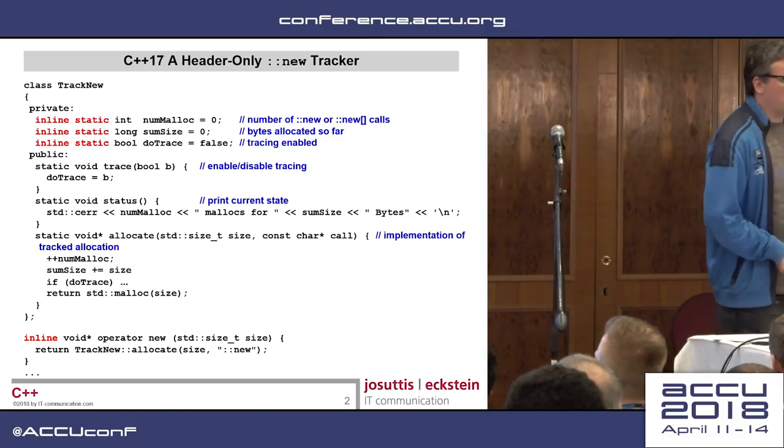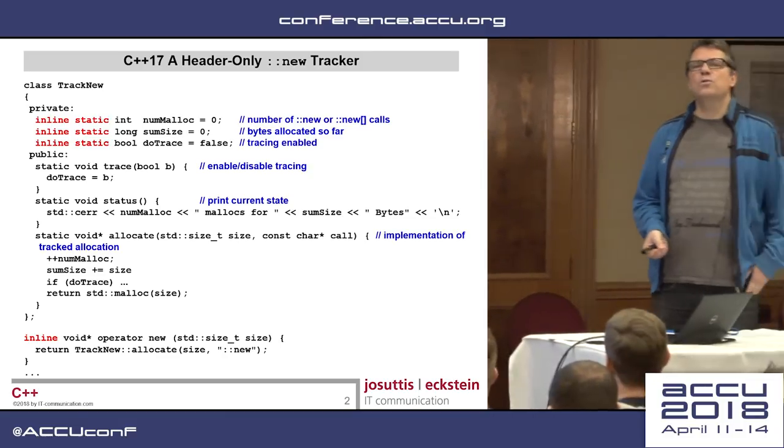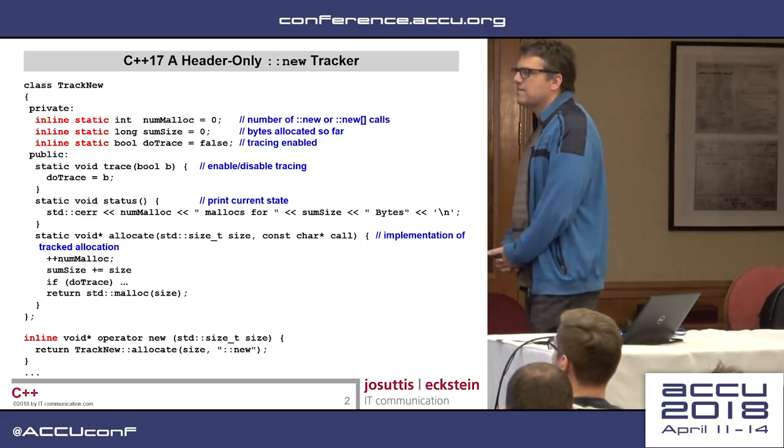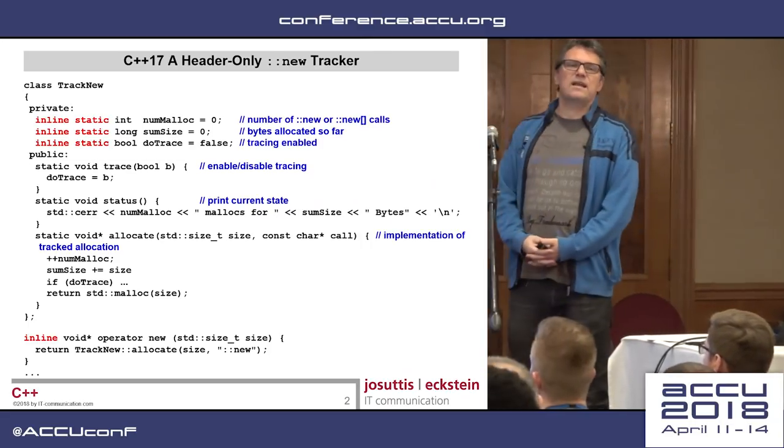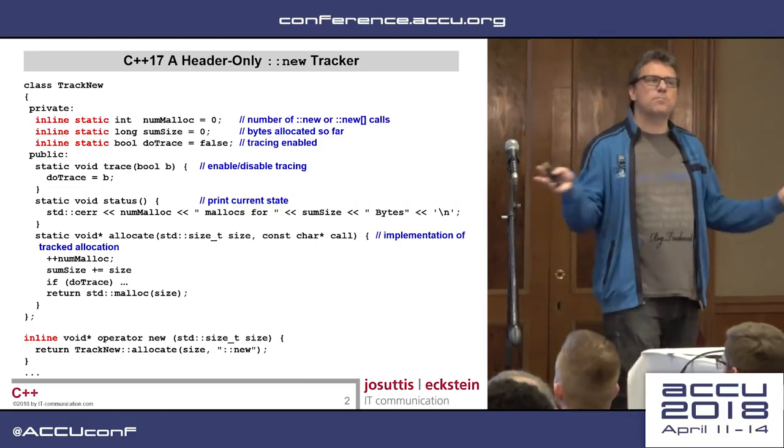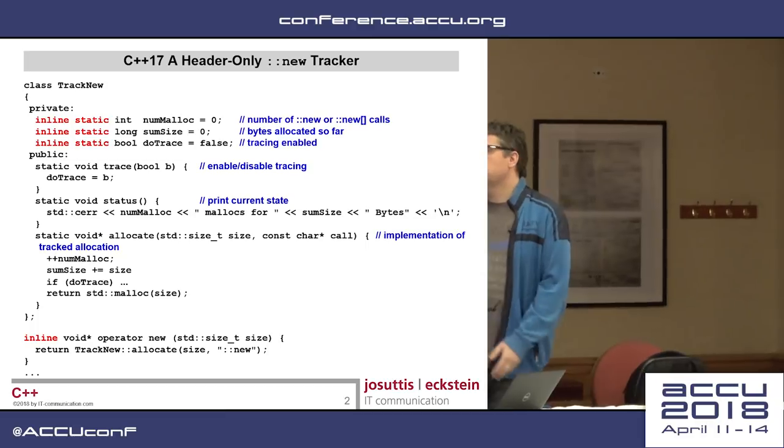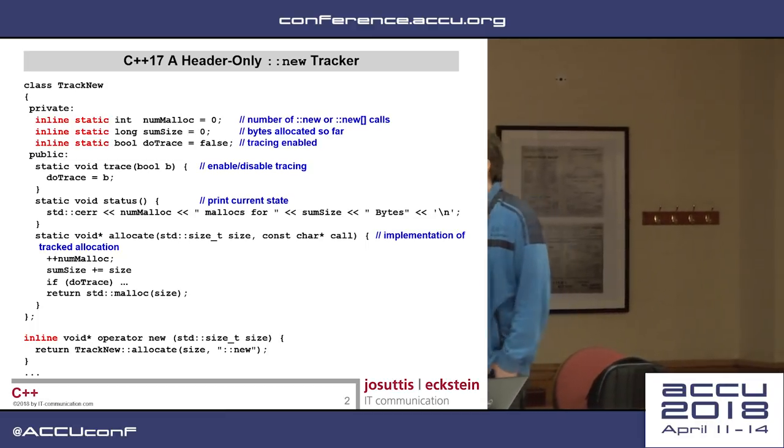I wrote my own new tracker, which I can use whenever I want to track calls of new, by just including this as a header file. That's enough. No change in compiler flags, no change in linker files, etc.